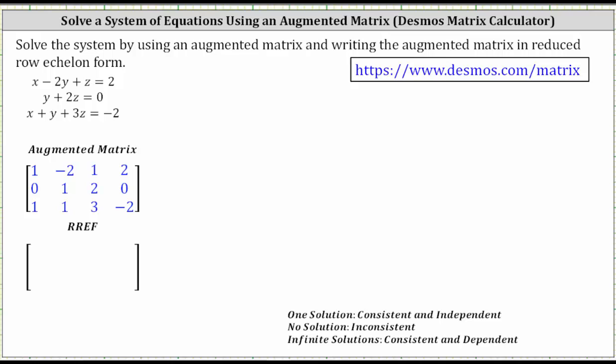This lesson will show how to solve a system of three equations with three unknowns using an augmented matrix, and then writing the augmented matrix in reduced row echelon form using the Desmos matrix calculator.